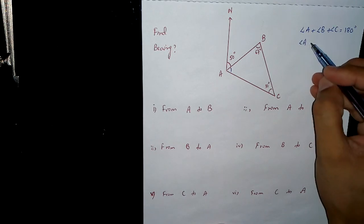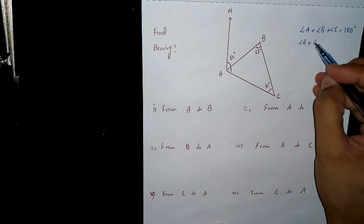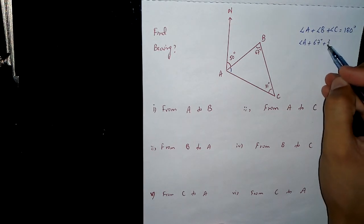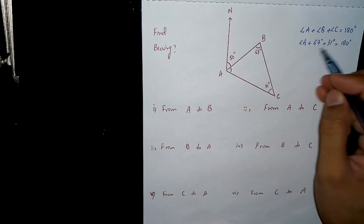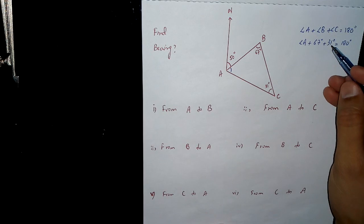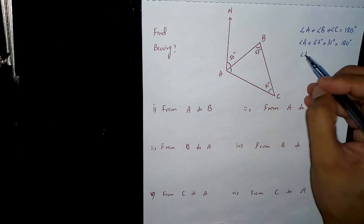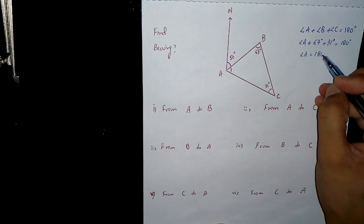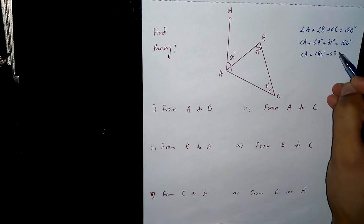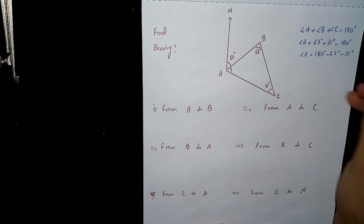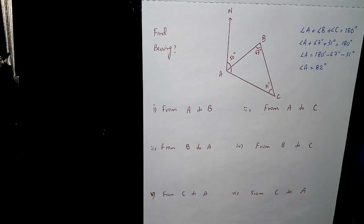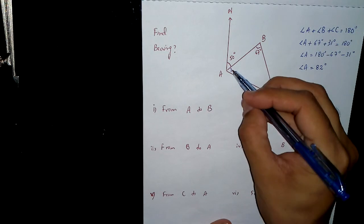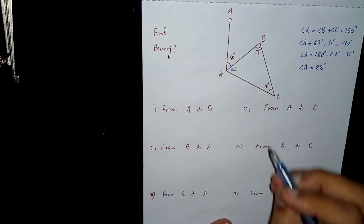So angle A is unknown. We have 67 plus 31 equals 180. Now angle A will be 180 minus 67 minus 31. So angle A will be 82 degrees. So now we know that this angle is 82 degrees.